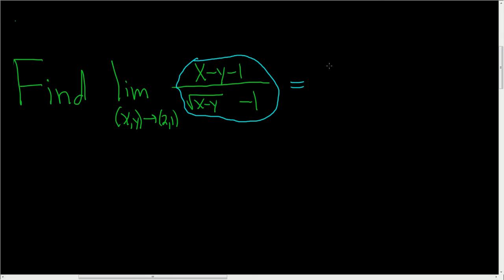So x is going to be 2 and y is going to be 1. Let's see what happens. So 2 minus 1 minus 1, and in the denominator we get the square root of, let's see, 2 minus 1. Then here we have a minus 1. This is 2 minus 2.